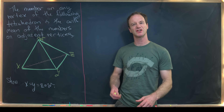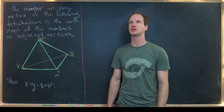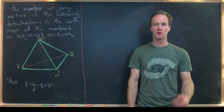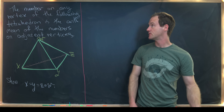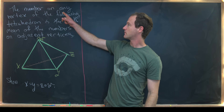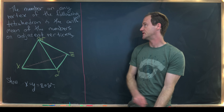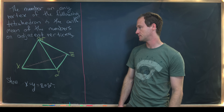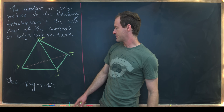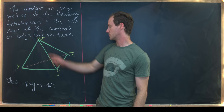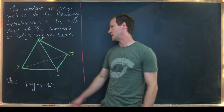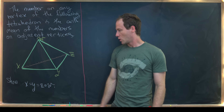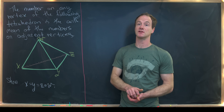Today I've got this nice property which is a special case of something that's true for polyhedra with labeled vertices. We're going to look at the tetrahedron version. The number on any vertex of the tetrahedron is the arithmetic mean of the numbers on adjacent vertices. So x is the arithmetic mean of y, z, and w; y is the arithmetic mean of x, z, and w; and so on. Our goal is to show that x equals y equals z equals w.